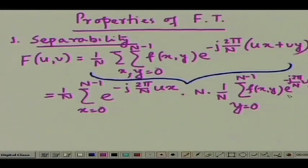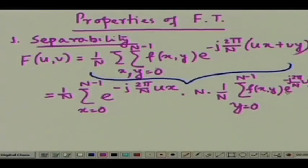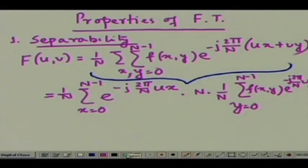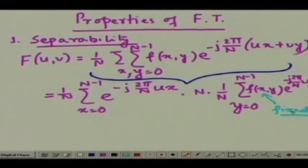If you look at this function f(x,y), the second summation operation where summation is taken over y from 0 to N minus 1 — for a particular fixed value of x, the different values of f(x,y) represent nothing but a particular row of the image. So for a fixed value of x, f(x,y) represents a particular row of the image, which is nothing but a one-dimensional signal.